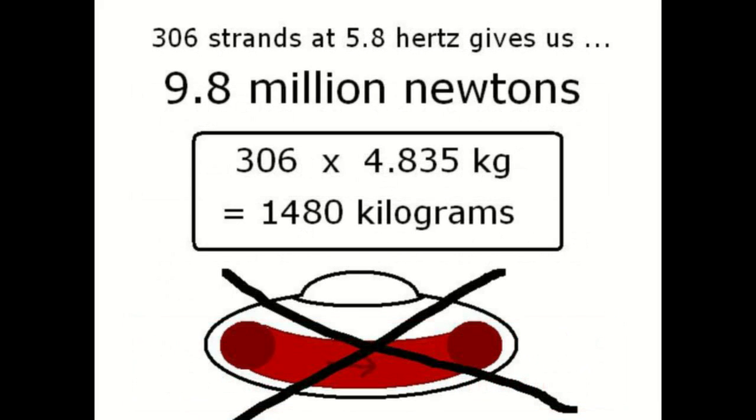Now 306 strands of this wire at 5.8 Hertz and 10 meters in diameter will give 9.8 million newtons. 306 times 4.835 kilograms per piece of wire equals 1480 kilograms of wire in our 10,000 kilogram craft or about 15% of the craft's weight.